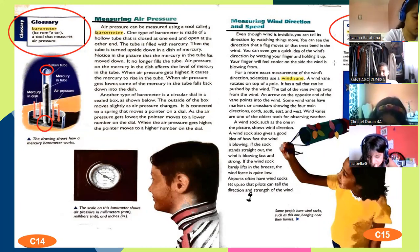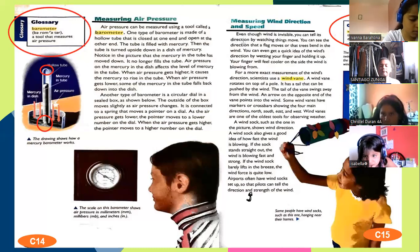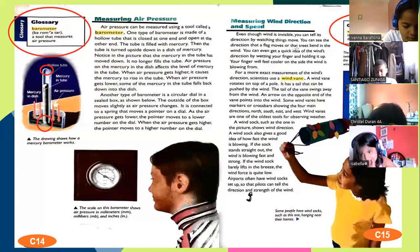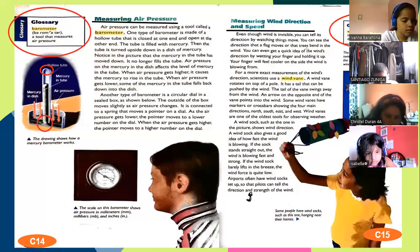Measuring wind direction and speed. Even though wind is invisible, you can tell its direction by watching things move. That's true. If I am a tree and I am moving to this direction, so it means wind is blowing from left to right here. But if I move to the other side, wind is blowing from right to left. Just by watching objects, we can say which direction the wind is blowing. You can see the direction that a flag moves or that trees bend in the wind.